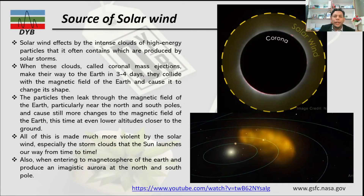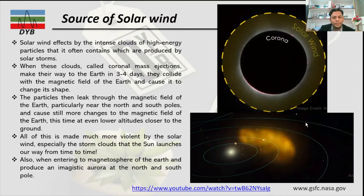Now let's look at the solar wind source. When the solar wind starts from the Sun, it propagates throughout the solar system. You can see the yellow region in the figure, which shows the solar wind propagating outward throughout the solar system.